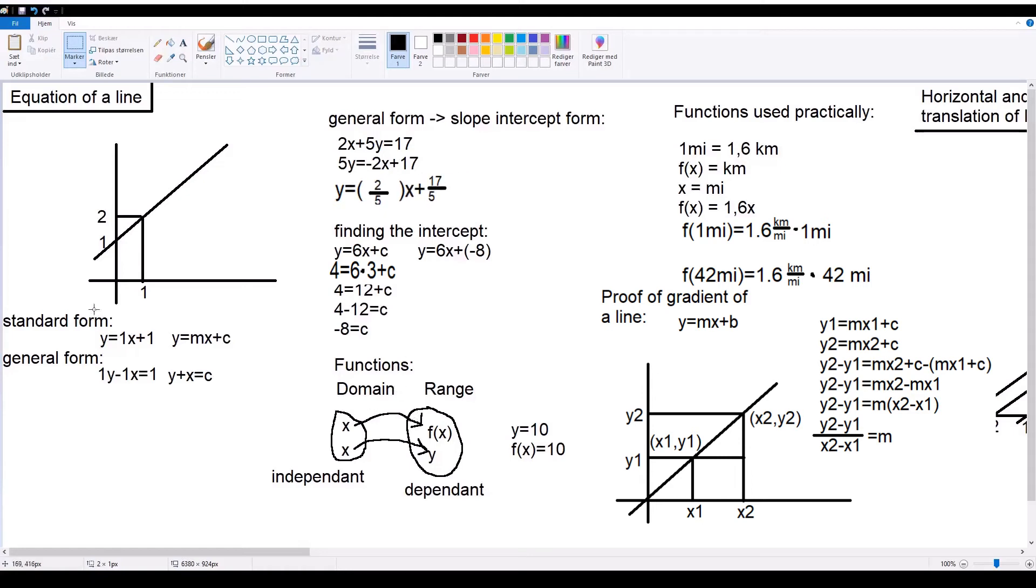For equation of a line, when looking at a line, this line will have an equation for it. There are two ways of writing it. The standard form is the slope-intercept form, which is y equals mx plus c.